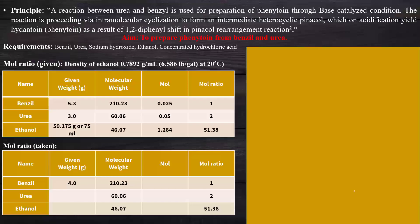Now we will speak to the principle of this particular preparation. A reaction between urea and benzil is used to prepare phenytoin through a base-catalyzed condition. Here we use a base-catalyzed condensation reaction. The reaction proceeds via intramolecular cyclization to form an intermediate heterocyclic pinacol, which upon acidification yields hydantoin as a result of a 1,2-diphenyl shift in a pinacol rearrangement reaction.